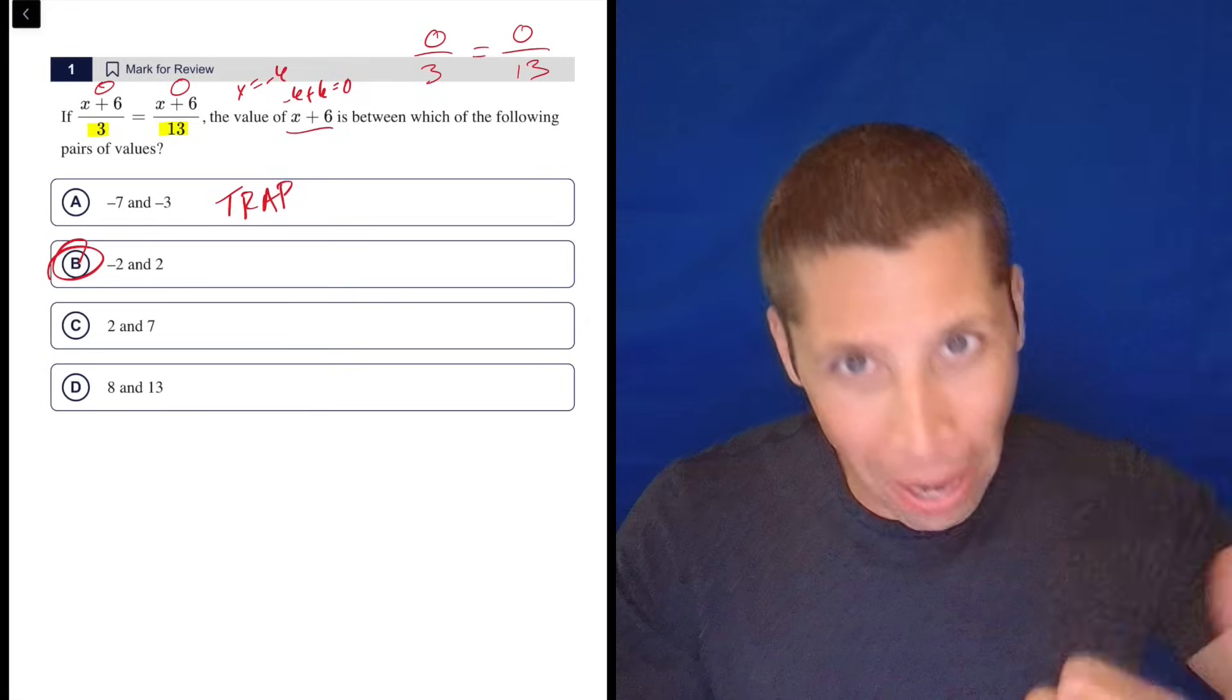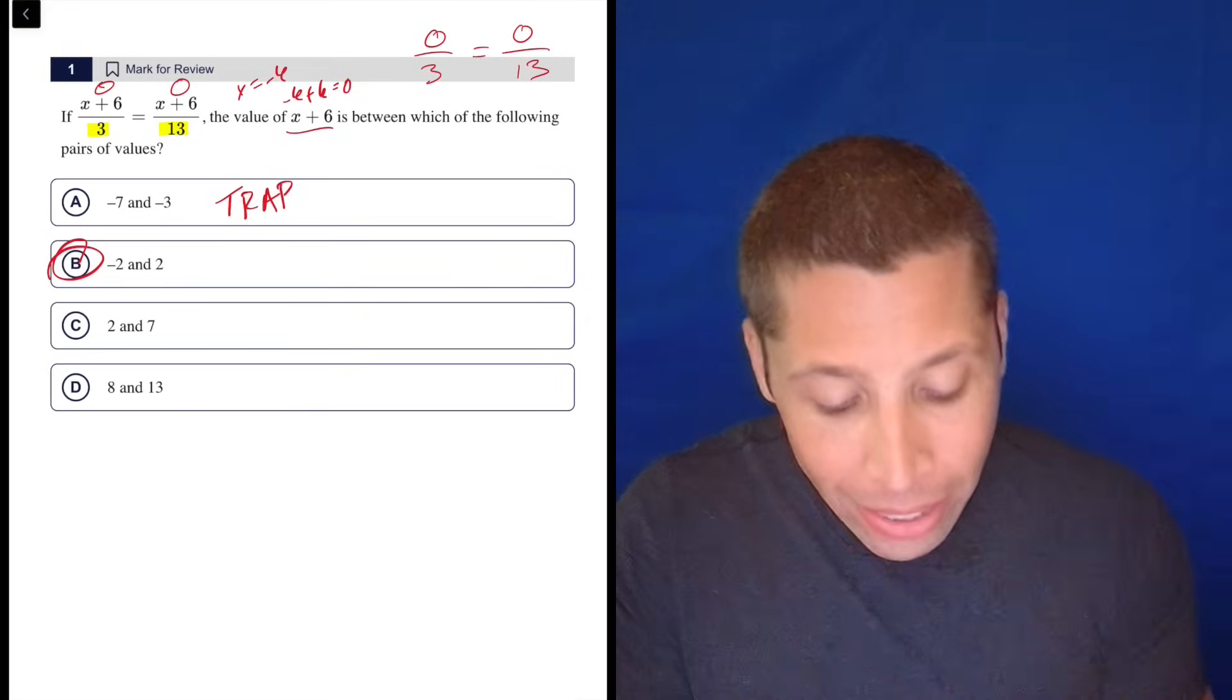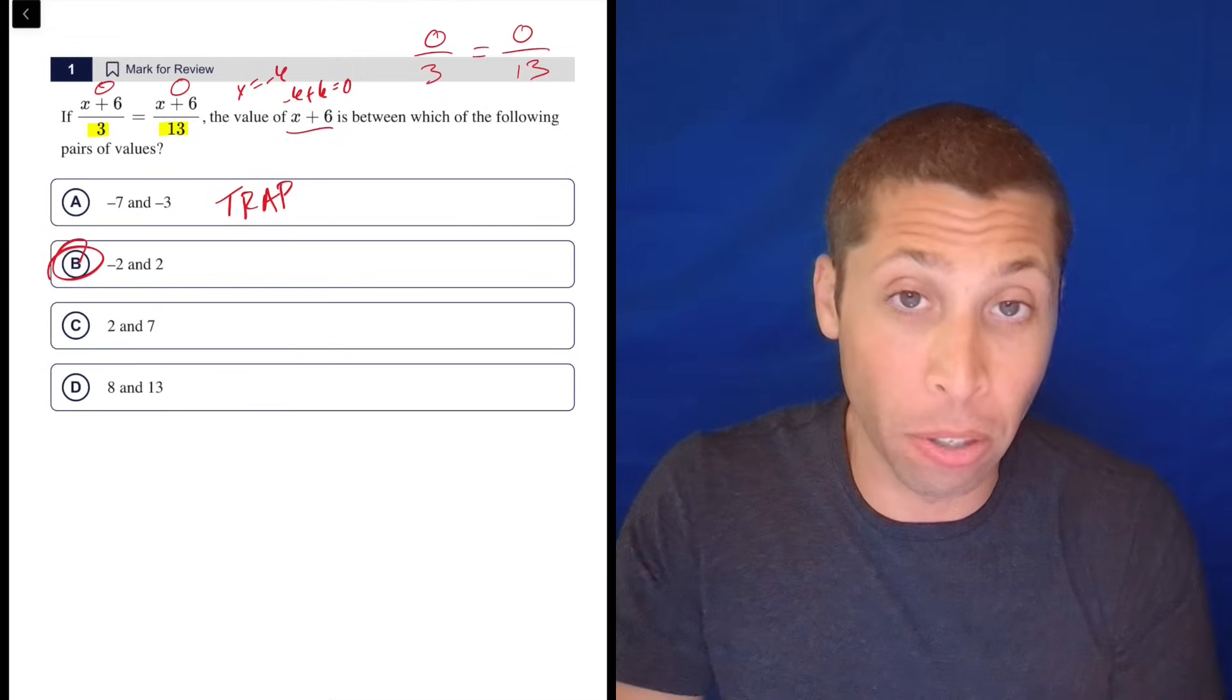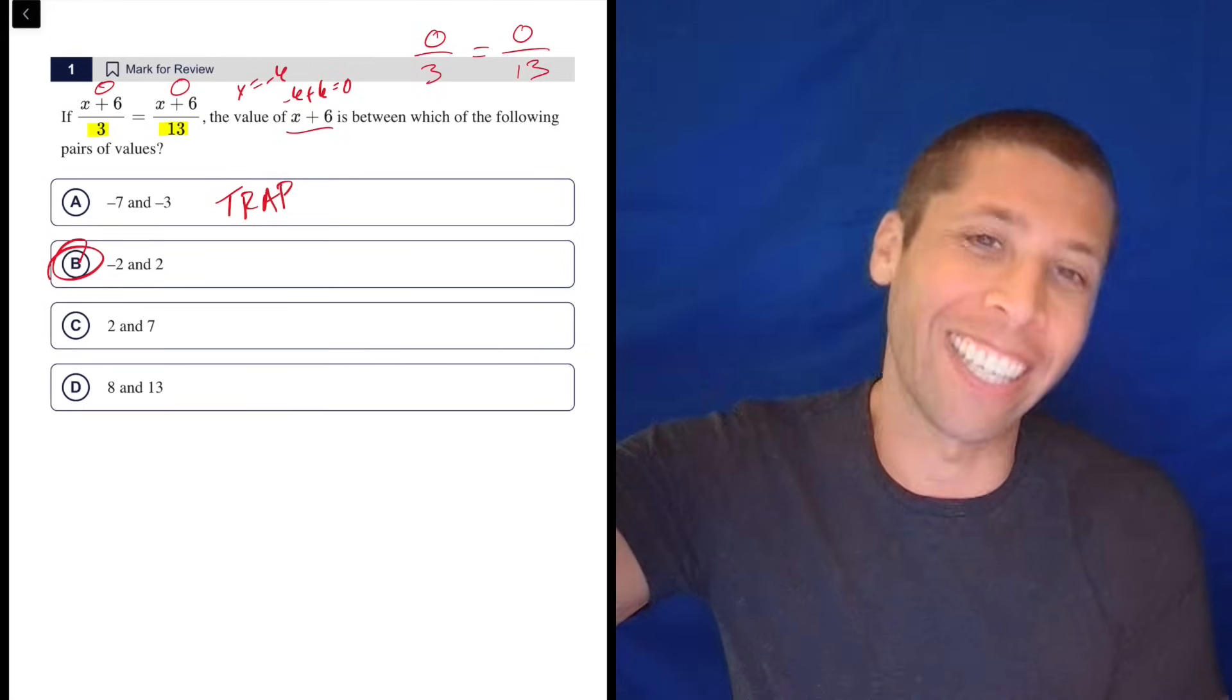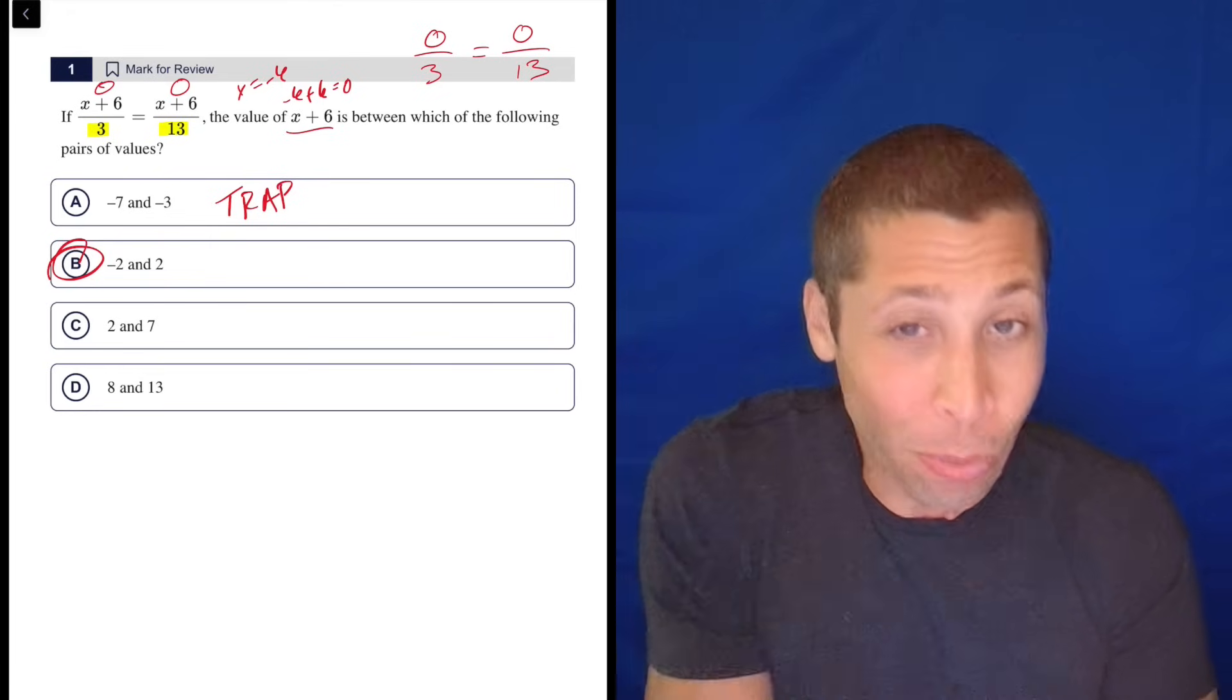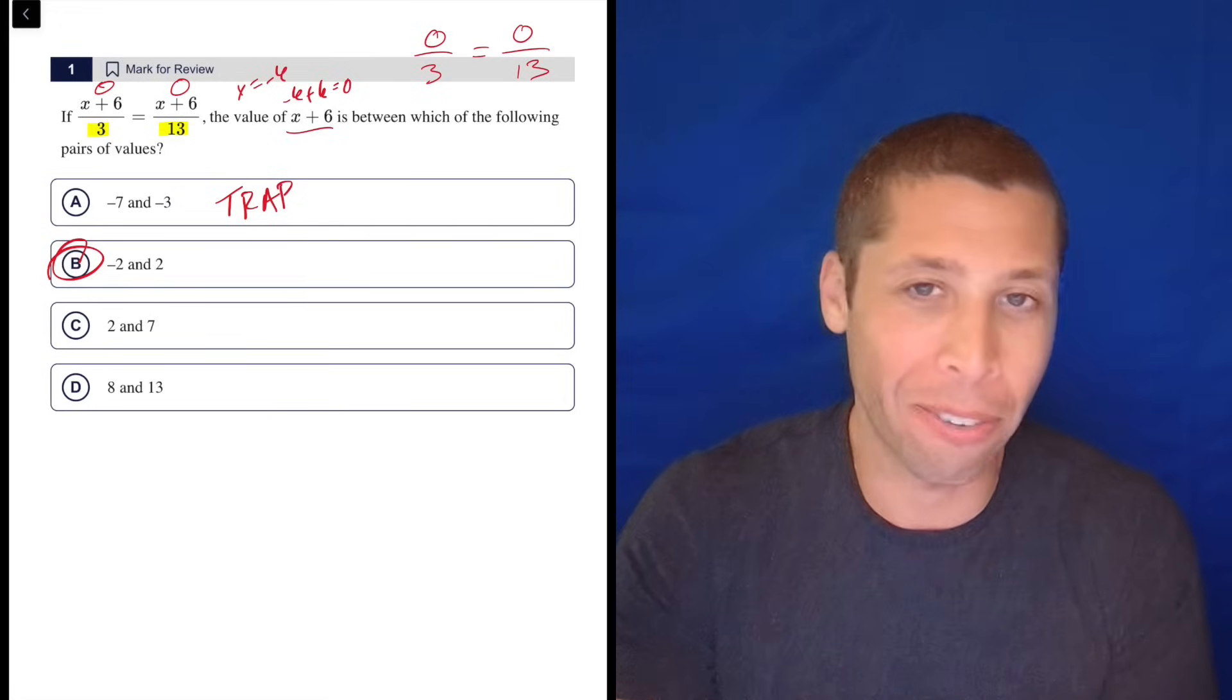And so some people, despite my inability to talk about it, will understand that right away, realize that X plus six is zero and then realize, okay, well, B is the only one that puts zero in a range here. But it's hard to articulate that thought. And so if I can't speak it well, do you really have confidence that that shortcut is true as you're kind of working it through?